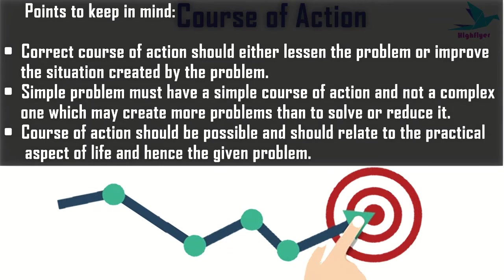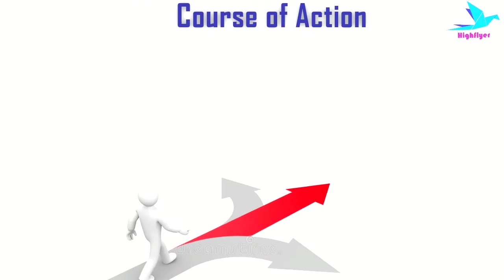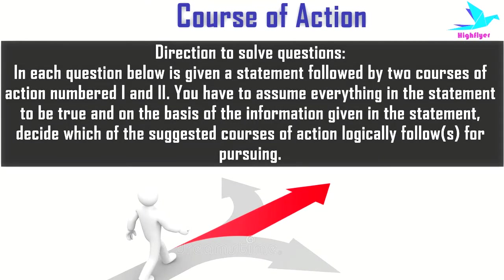Each course of action question is given a statement followed by two courses of action — number one and two. You have to assume everything in the statement to be true, and on the basis of the information given in the statement, decide which of the suggested courses of action logically follows for pursuing.